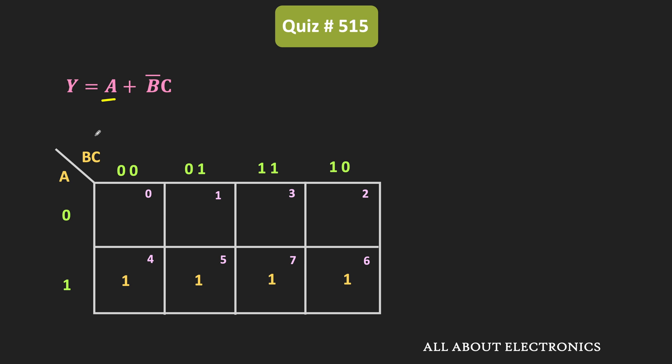Likewise, B̄C can be represented by these two min terms. In this group of two min terms, variable A is changing while variables B and C remain constant. The value of B is zero and C is one, therefore this group represents B̄C.